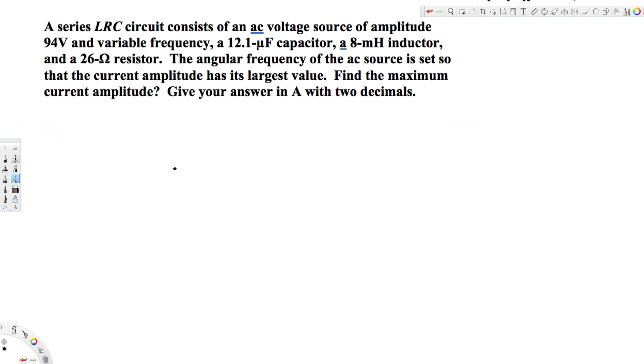What's going on guys, let's look at this problem right here. This question is asking: a series LRC circuit consists of an AC voltage source of amplitude 94 volts and variable frequency, a 12.1 microfarad capacitor, an 8 millihenry inductor, and a 26 ohm resistor.